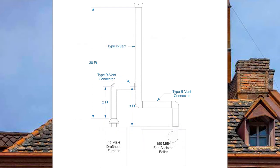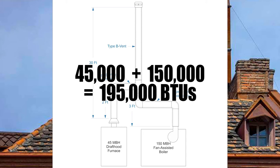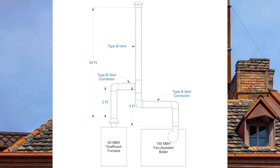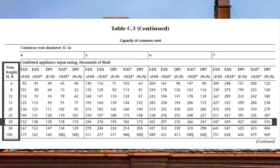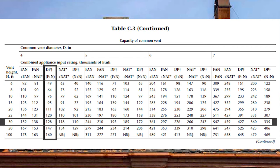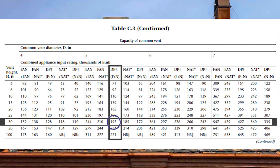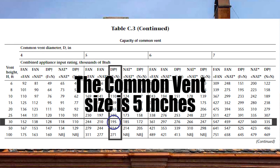Time to size the common vent. Adding up the total BTU load: 45,000 plus 150,000 is 195,000 BTUs. Turning to page 200 to size the common vent capacity, I come down on the left to 30 feet and across to DP F plus N — fan assisted plus draft hood equipped appliance. Four inch is good to 128,000 BTUs, which is not enough. Five inch is good to 195,000 BTUs — exactly what I need. I will select a five-inch common vent.